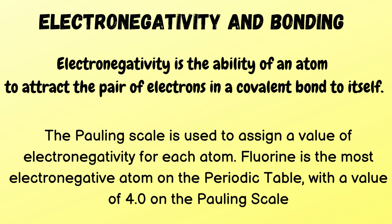Welcome back to my channel. Today I would like to share with you the topic of chemical bonding. First, let's look at electronegativity and bonding. Electronegativity is the ability of an atom to attract the pair of electrons in a covalent bond to itself. The Pauling scale is used to assign a value of electronegativity for each atom.